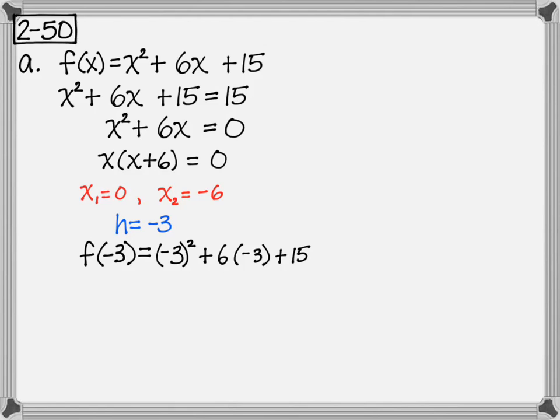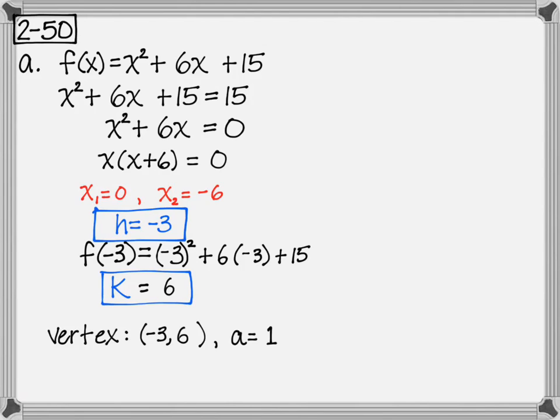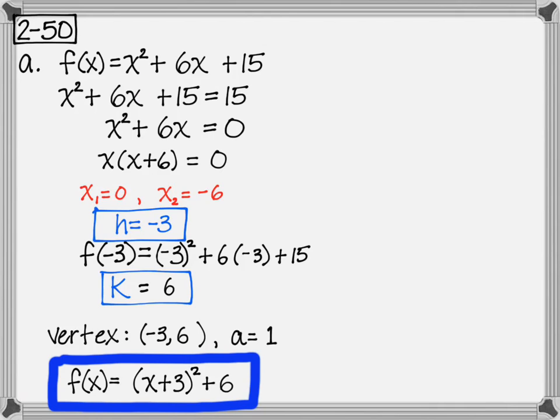We're going to plug in the negative 3 into the quadratic function, evaluate, and we get 6. So now we have our h and our k, our vertex. We know our a is 1 from our function up here, and we plug that into the formula for the vertex form of a quadratic. And that's it.